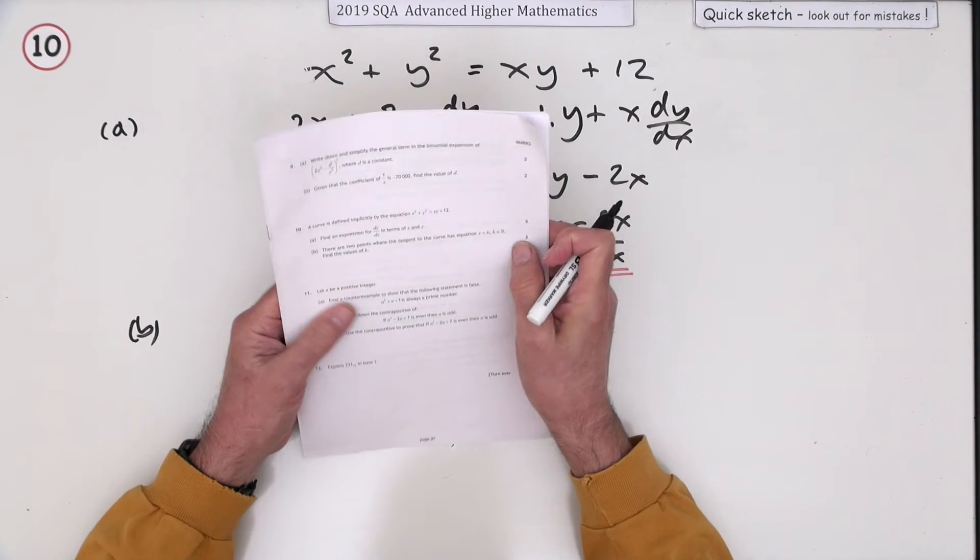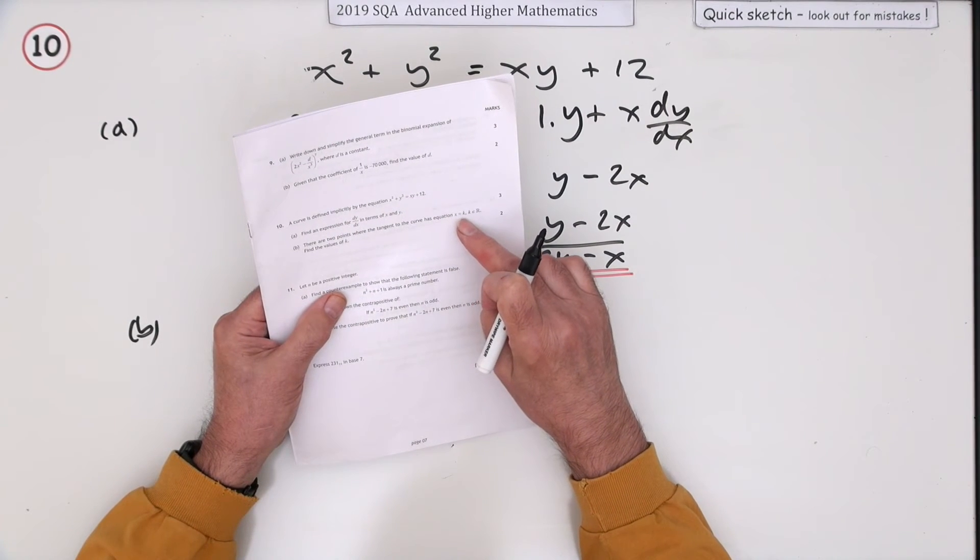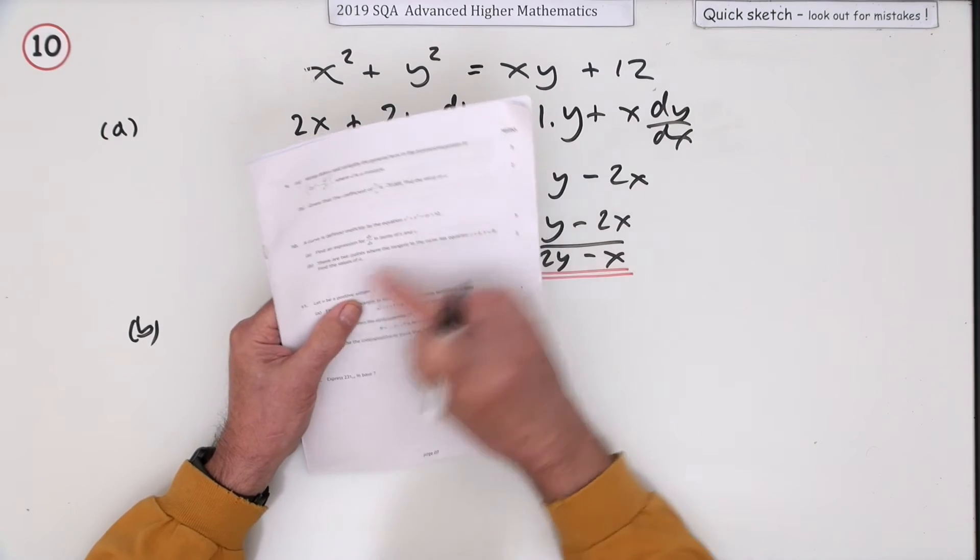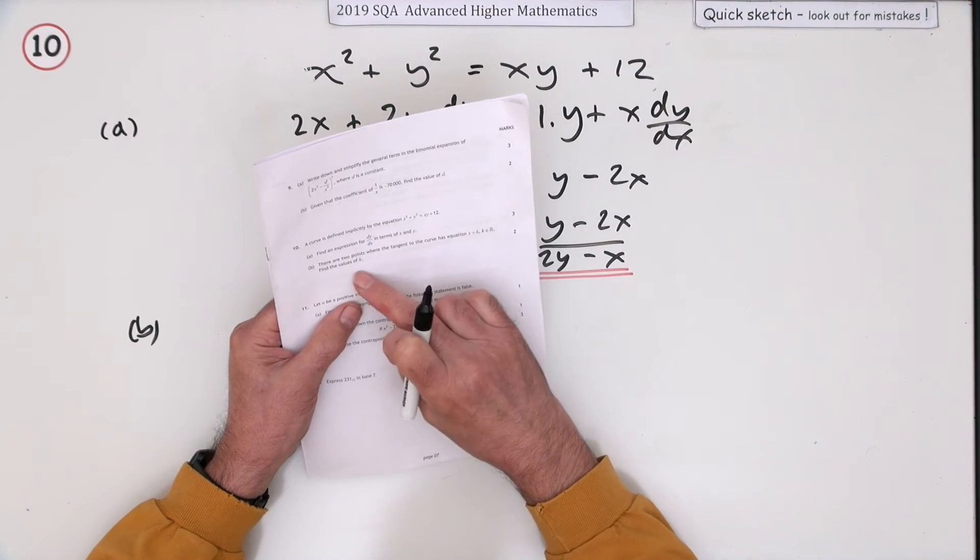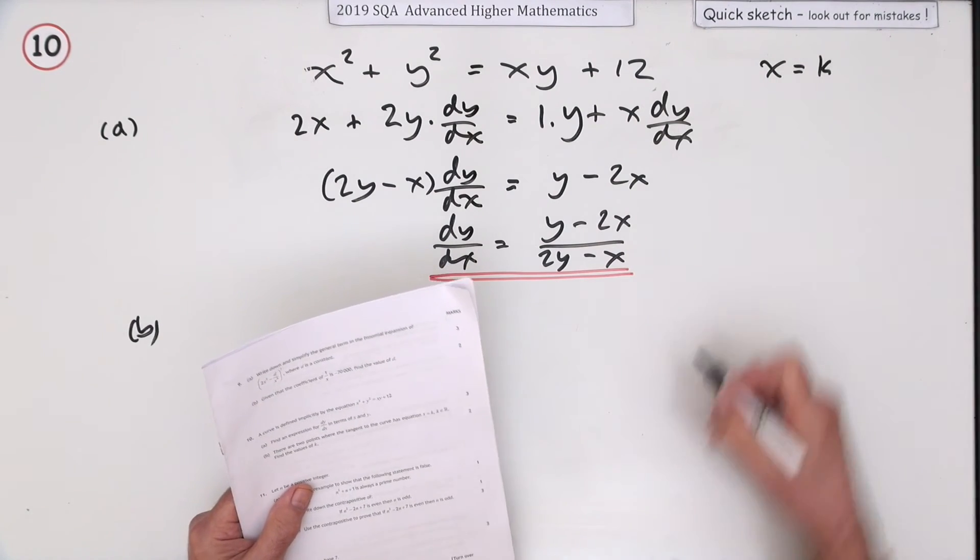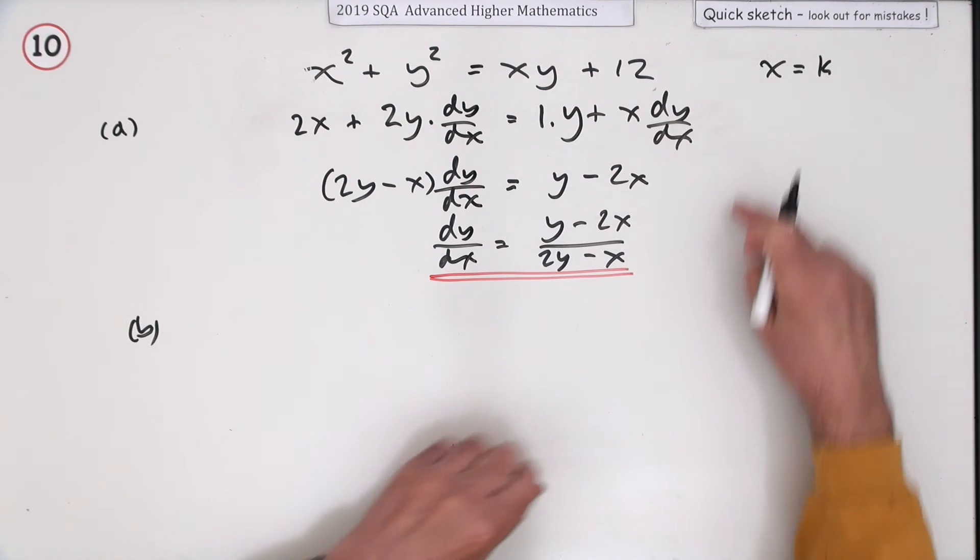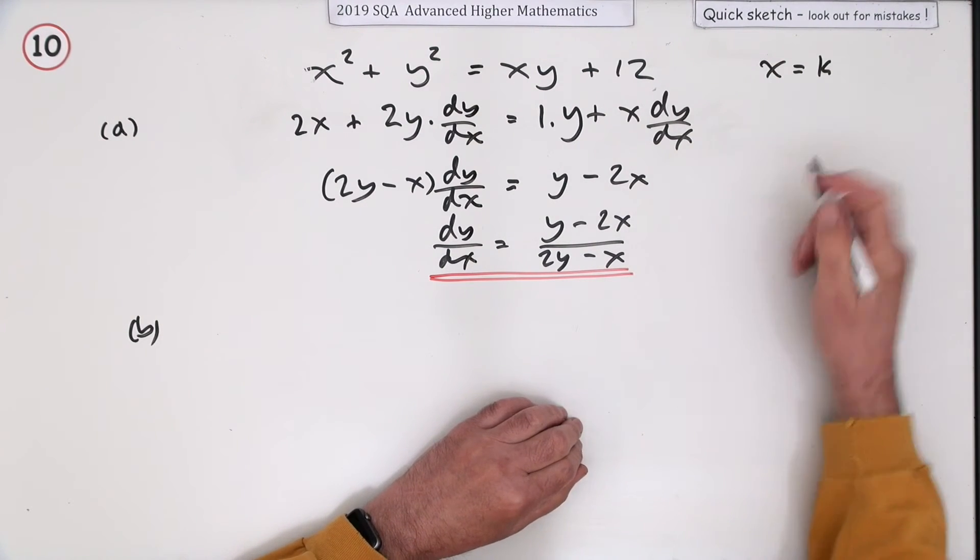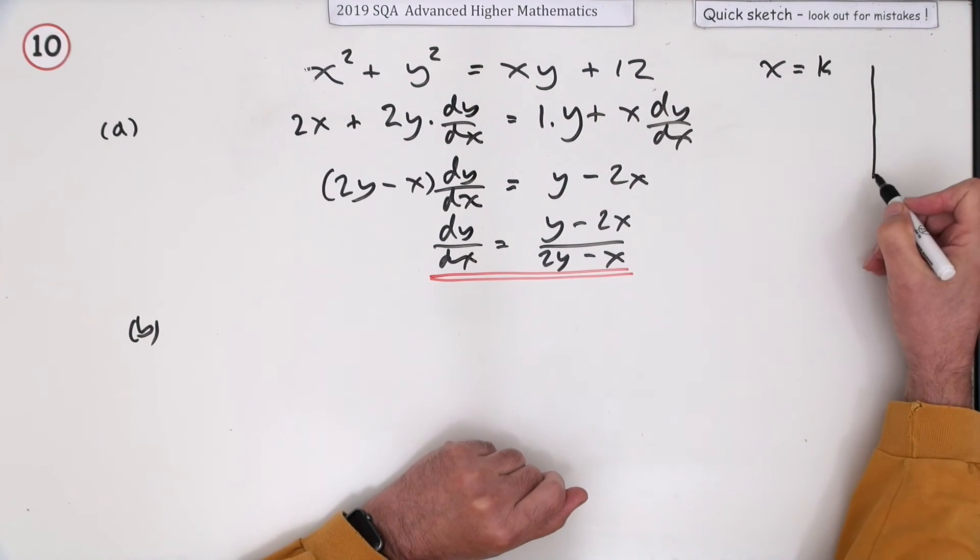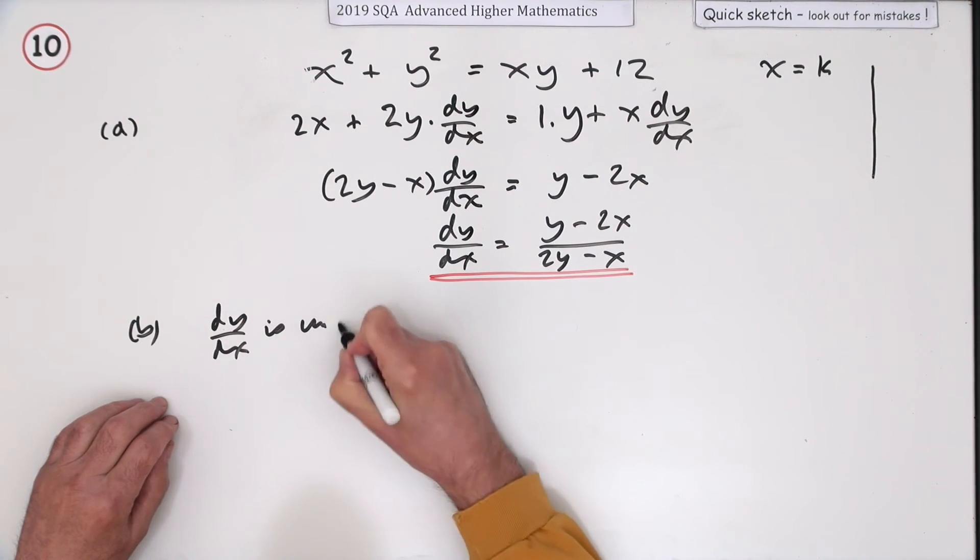Now part (b) for 3 marks: there are two points where the tangent to this curve has equation x equals k. If that's the case, find the values of k. So what it says is there's a tangent with the equation x equals k. Now you've already got an expression for the gradient, so what would be the gradient of this line? Well, x equals k is a vertical line, and if it's a vertical line, then you can say dy/dx is undefined.